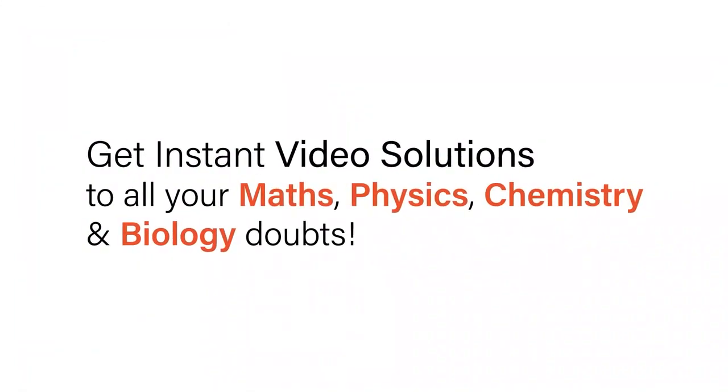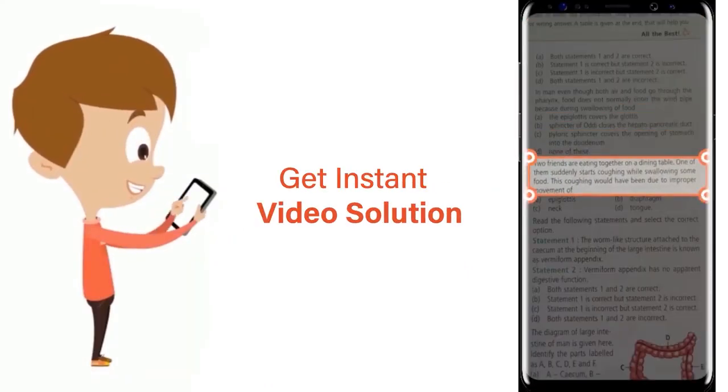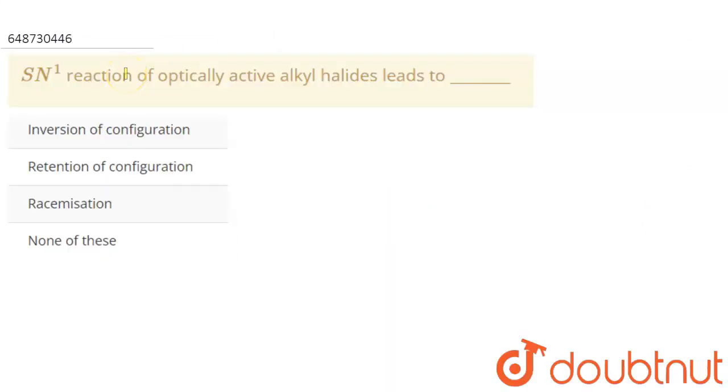With Doubtnut, get instant video solutions to all your maths, physics, chemistry and biology doubts. Just click the image of the question, crop the question and get instant video solution. Download Doubtnet app today. Hello everyone, the question is SN1 reaction of optically active alkyl halides.